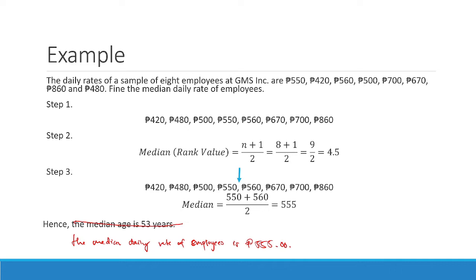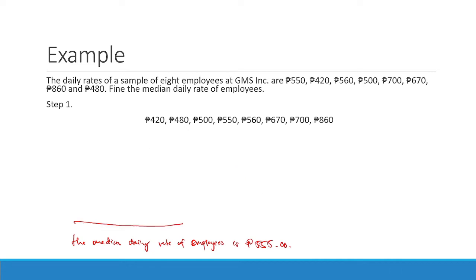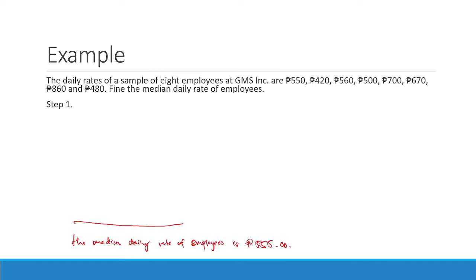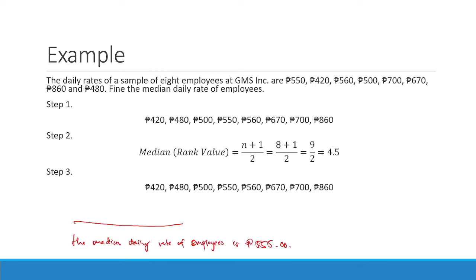Hence, the median daily rate of employees is 555 pesos. That is how you compute for the median of ungrouped data — one with an odd numbered sample size and one with an even numbered sample size.